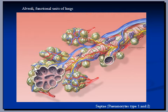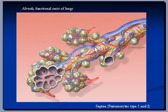This is a sketch of alveoli, the functional units of lung. Each lung is made up of millions of alveoli. This is a branch of pulmonary artery that brings deoxygenated blood from the right ventricle of the heart to the lungs, and in these alveoli this blood absorbs oxygen and removes carbon dioxide.